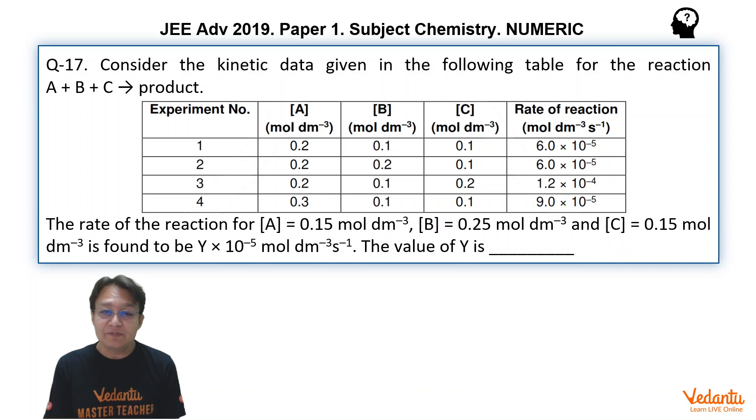In 4 experiments, in experiment number 1, concentration of A is 0.2, B is 0.1, C is 0.1. In experiment 2, concentration of A is still 0.2, but concentration of B is doubled, and we can see that the rate of the reaction given in the table is unchanged.